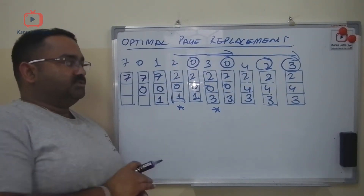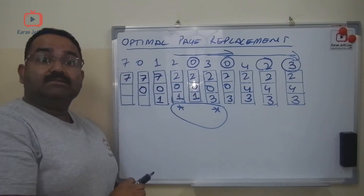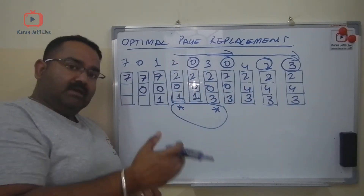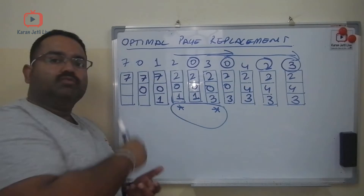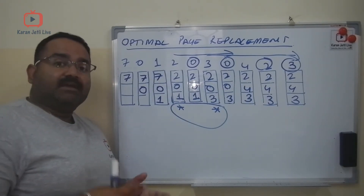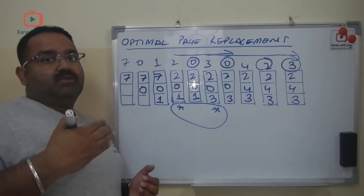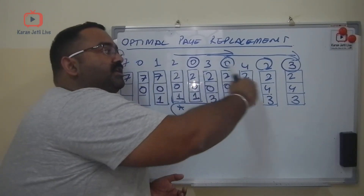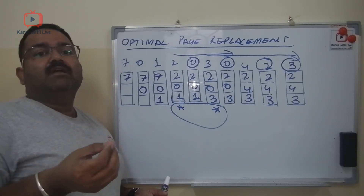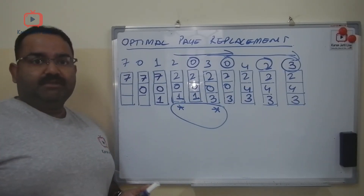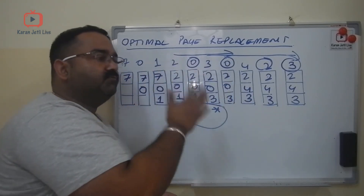If you look at the optimal approach, only two page replacements were done. In FIFO and LRU, we had many more page replacements. With the optimal page replacement algorithm, we did only two replacements and managed our cache efficiently — that is why we call it optimal. It is the best approach, but it is expensive because we need to keep track of future page needs, which comes with some extra calculations.